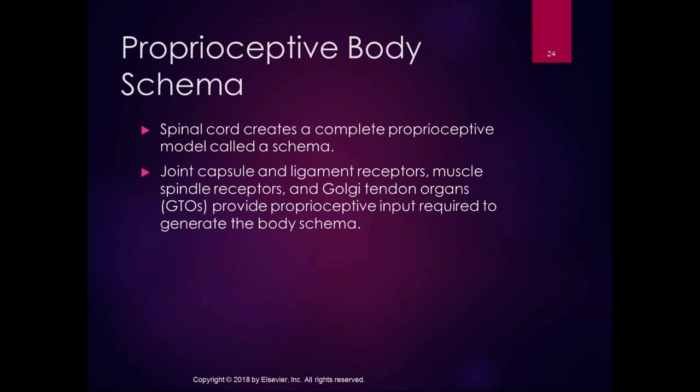All the information from joint capsule and ligament receptors, muscle spindle receptors, and Golgi tendon organs provides the proprioceptive input required to generate the body schema. When testing in the clinic — like asking whether your arm or finger is up or down — the spinal cord checks that body schema, collecting information from all those receptors to make that decision.